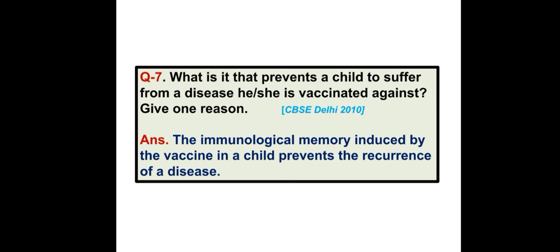What is it that prevents a child from suffering from a disease he or she is vaccinated against? Give one reason. Answer: The immunological memory induced by the vaccine in a child prevents the recurrence of a disease.